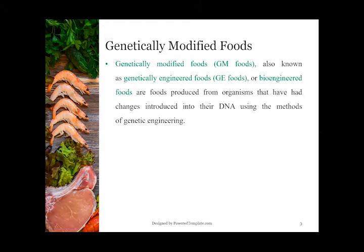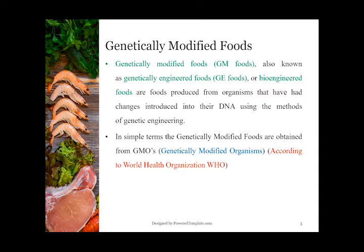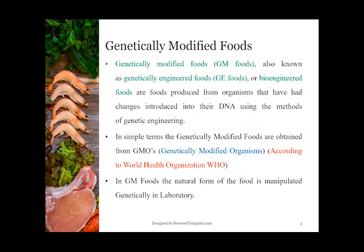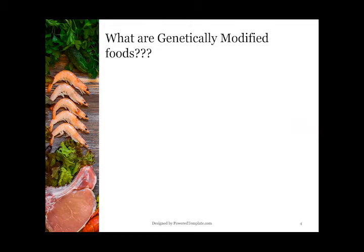In simple terms, genetically modified foods are obtained from GMOs — genetically modified organisms — according to WHO, the World Health Organization. In GM foods, the natural form of the food is manipulated genetically in a laboratory.